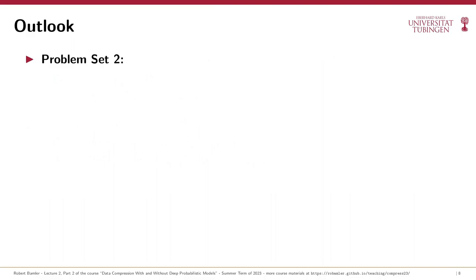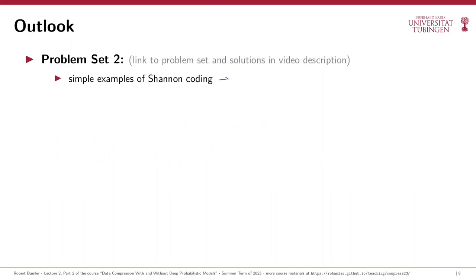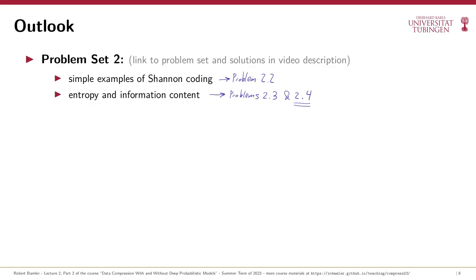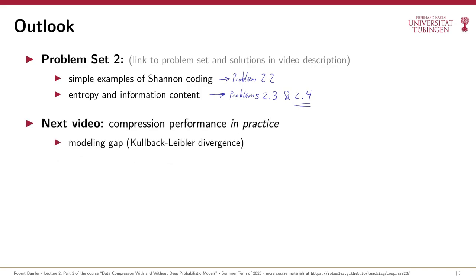That's it for this video. On the problem set linked in the description, you'll work through examples of Shannon coding and gain intuition for entropy and information content, including a fun example in problem 2.4. In the next video, we'll see how these theoretical bounds manifest in practical situations, quantify the overhead from an imperfect probabilistic model, and learn how to learn probabilistic models.